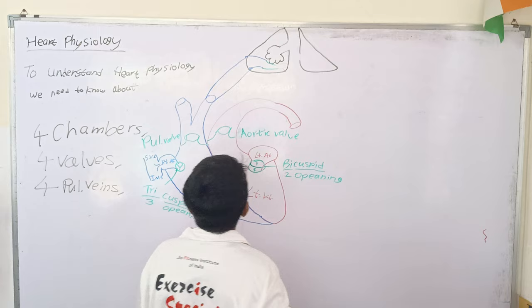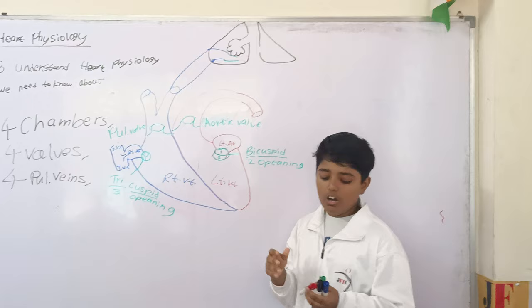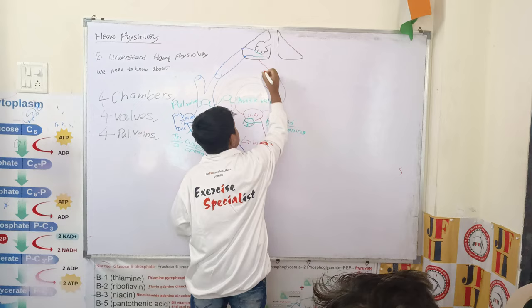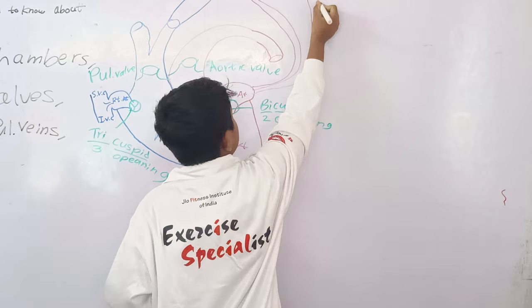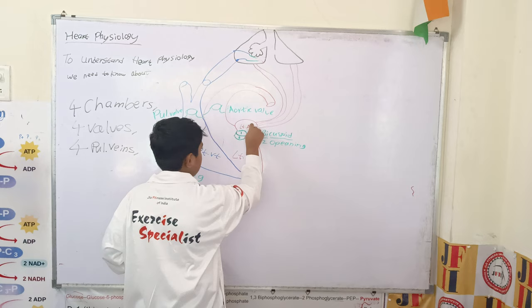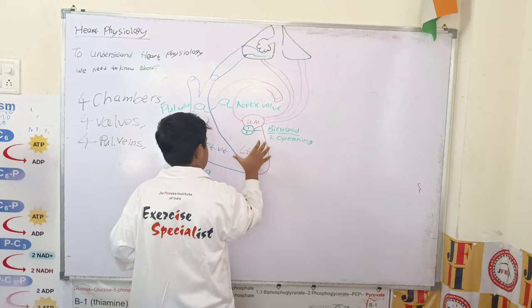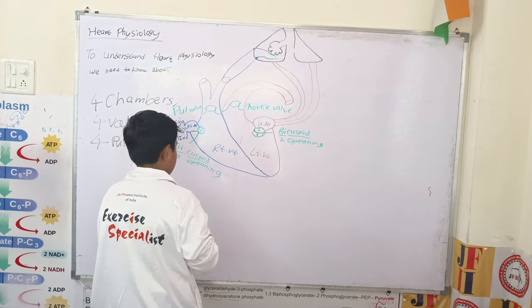The pulmonary artery carries the blood, and after coming back, the pulmonary vein carries oxygenated blood. The pulmonary vein goes directly into the left atrium. The pulmonary vein carries oxygenated blood, and after going to the left atrium, it will go through the bicuspid valve into the left ventricle, and the left ventricle will push the blood through the aortic valve.